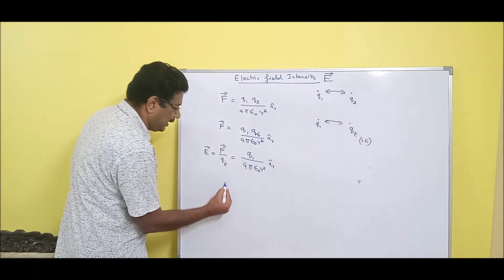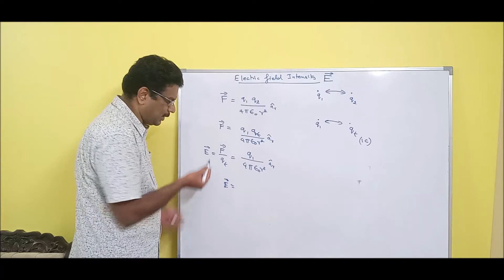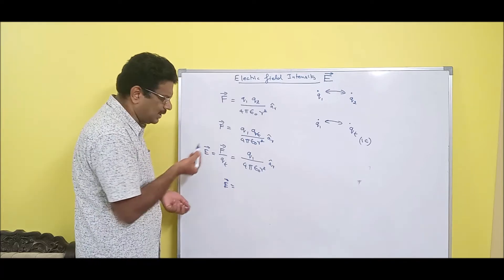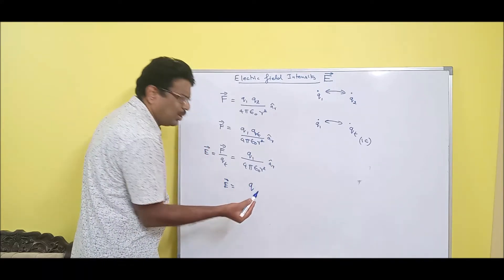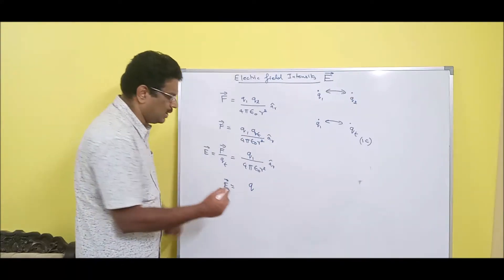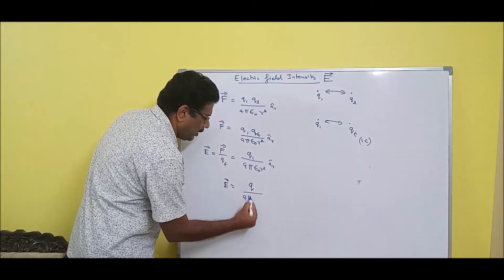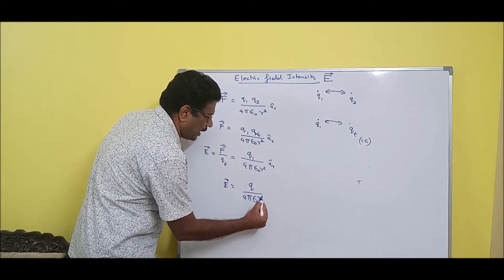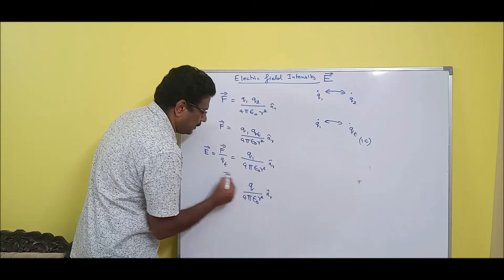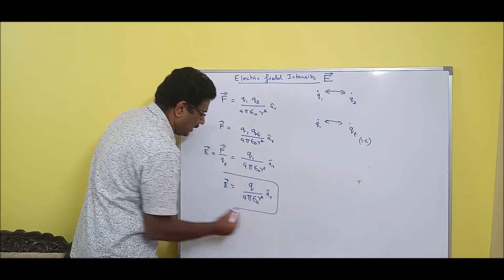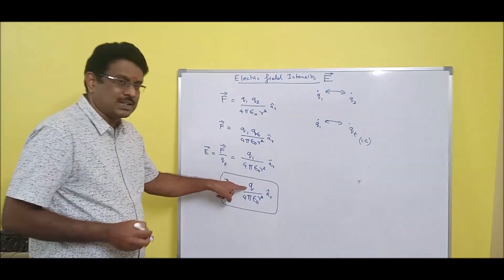Let me rewrite this. E is a vector equal to Q divided by 4·pi·epsilon-naught·r-squared·a-r-cap. The formula is ready. Here Q is the given source charge, and there is a test charge whose force we are considering.